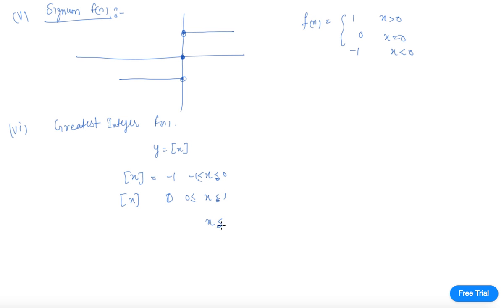When x lies between 2 to 1 it is 1, and the graph of this function will be like this. From 0 to 1 it will be 0, then it will be this 1, 2, 3, 4, and this is 1, 2, 3. Similarly, it goes like this. Students, this is the graph of the signum function.